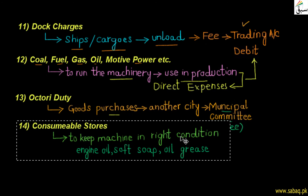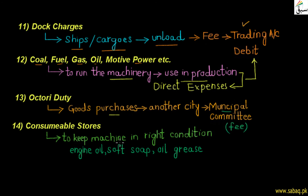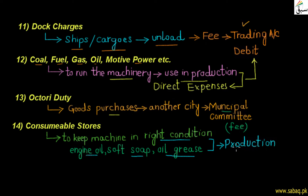Next, we have consumable stores. What are consumable stores? We keep our machines in a working condition or right condition — we keep them clean. We pay for engine oil, soap, oil, grease, and similar items to keep the machine safe and maintained. We call these expenses consumable stores. If we don't keep our machine in the right condition, how will we do production? So this is also related to our production and is written on the trading account debit side.